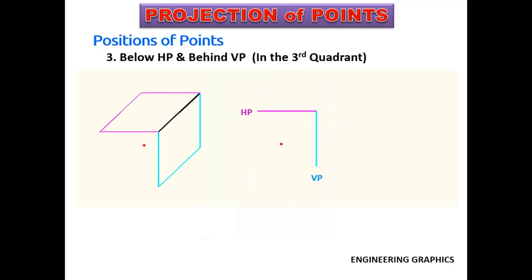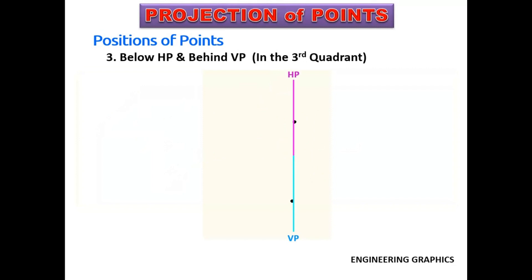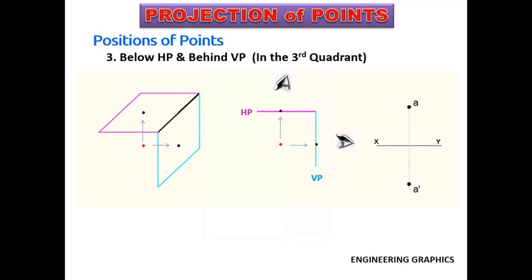The third case is when the point is below HP and behind VP — that is, the point is in the third quadrant. Elevation falls on VP and plan falls on HP. HP is turned 90 degrees in the clockwise direction. Now the elevation is below the intersection line of planes, named A-dash, and the plan is above the intersection of planes, named A. So elevation is below XY line and plan is above XY line.